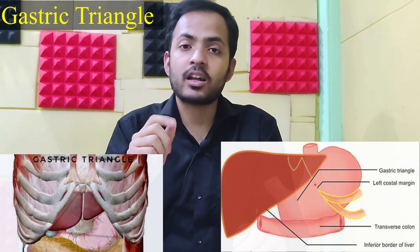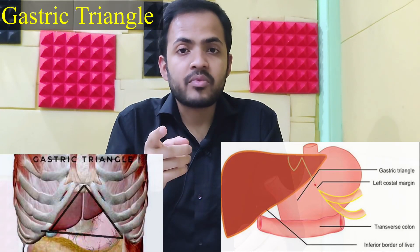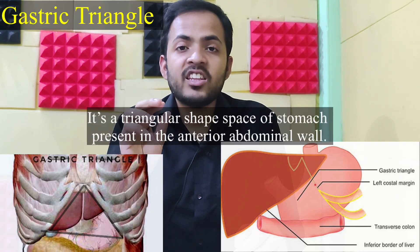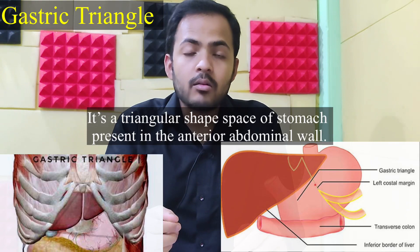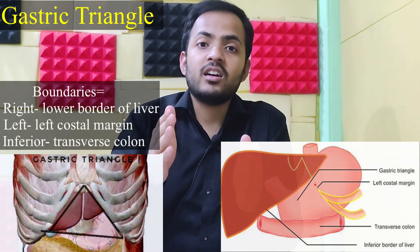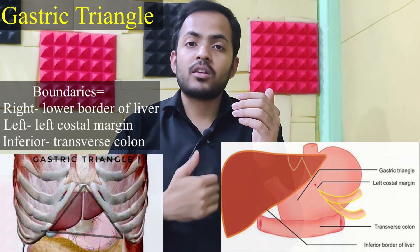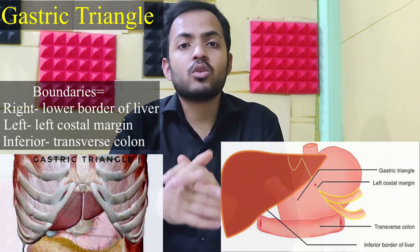Hello and welcome. The gastric triangle is very important for your exam. It is a triangular-shaped space in the area of the stomach, present in the anterior abdominal wall, bounded by the lower border of the liver on the right side, the left costal margin on the left side, and inferiorly by the transverse colon.